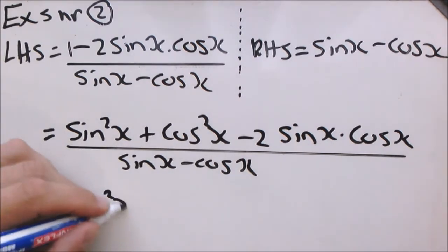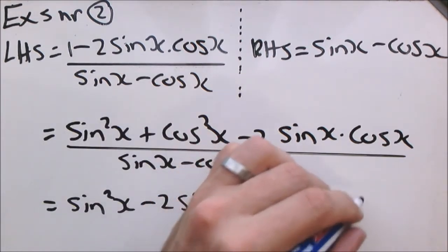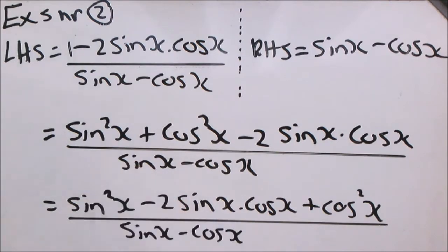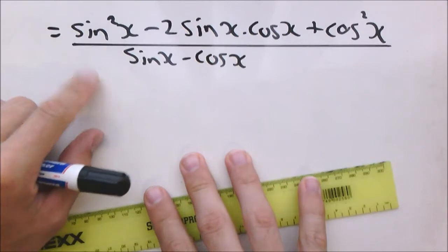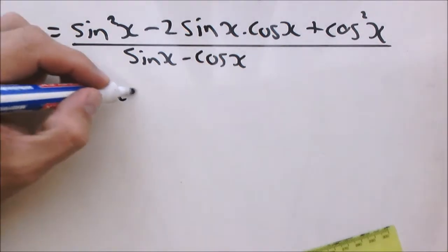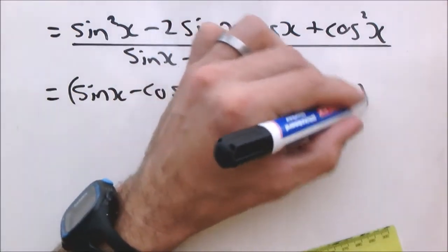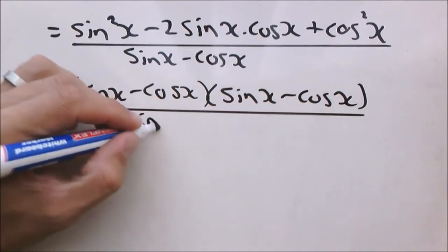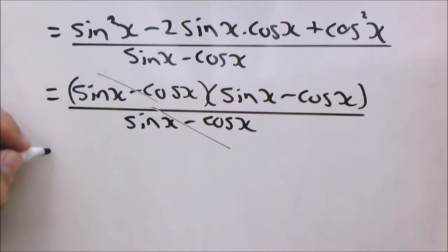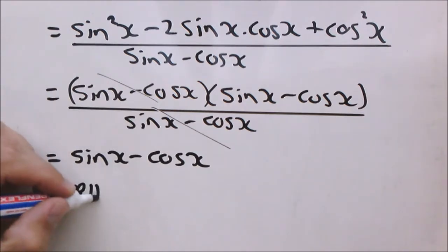It is not as clear yet, but if I rewrite this expression in the following order, it will become very clear that we are working with a trinomial. So here we have a trinomial: sin squared x minus 2 sin x cos x plus cos squared x. And if you factorize, it will become sin x minus cos x, in a bracket, times sin x minus cos x, in a bracket. Now we can cancel out one of these brackets. The final answer will be sin x minus cos x, which is equal to the right hand side.